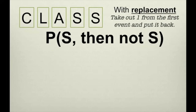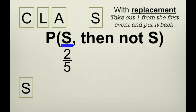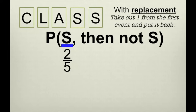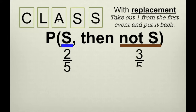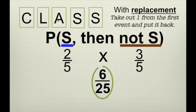What's the probability of selecting an S and then a letter that's not an S? The first event — drawing an S — has a probability of two out of five. We replace the S, so we still have CLASS. How many letters are not S's? There are three: C, L, and A. So the probability of the second event is three out of five. We multiply two-fifths times three-fifths and get six twenty-fifths.